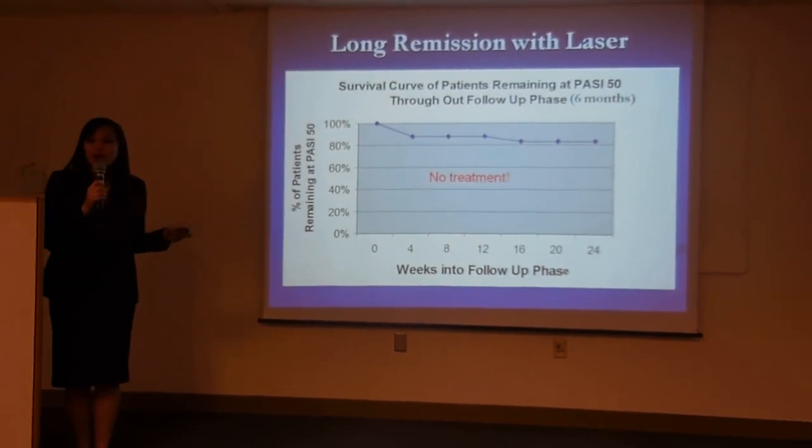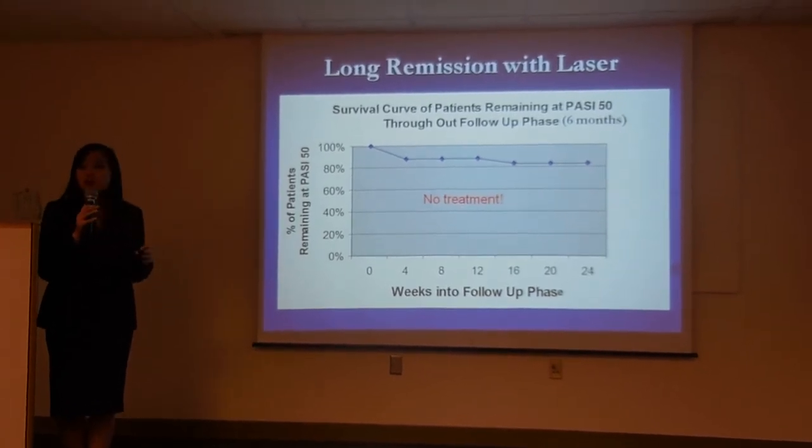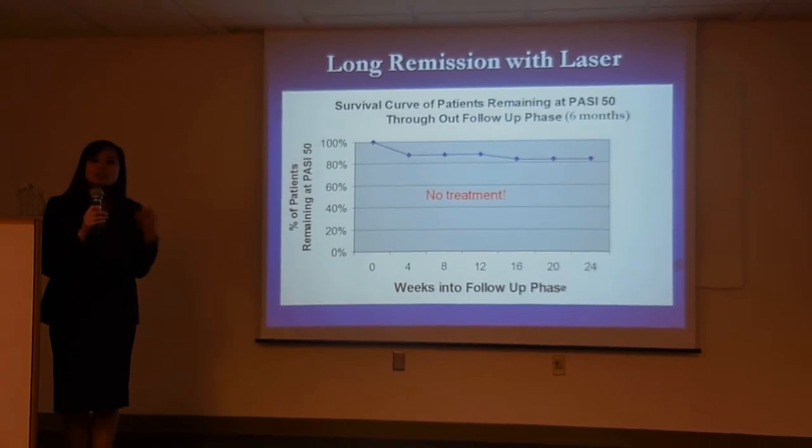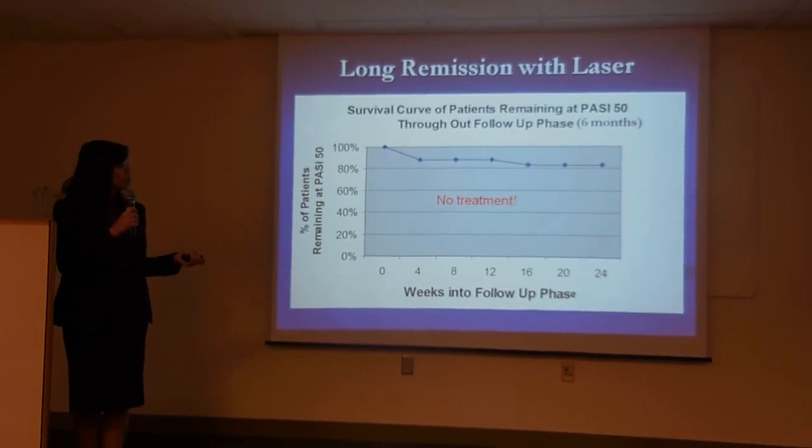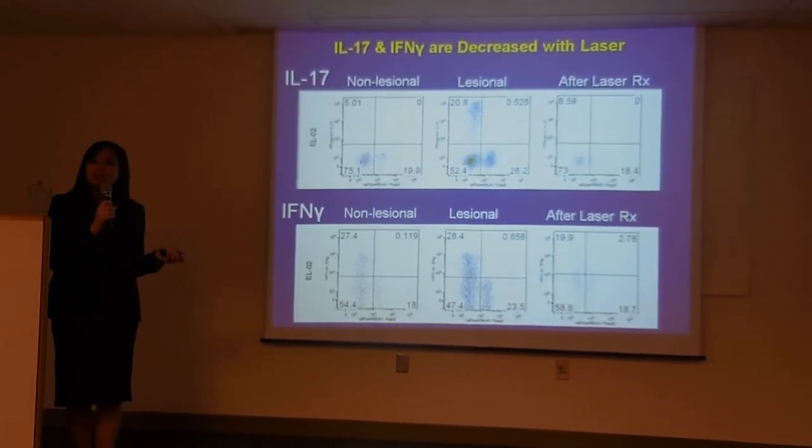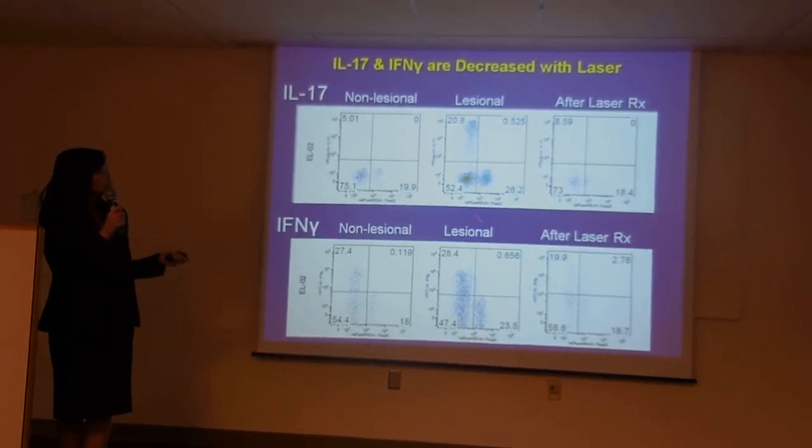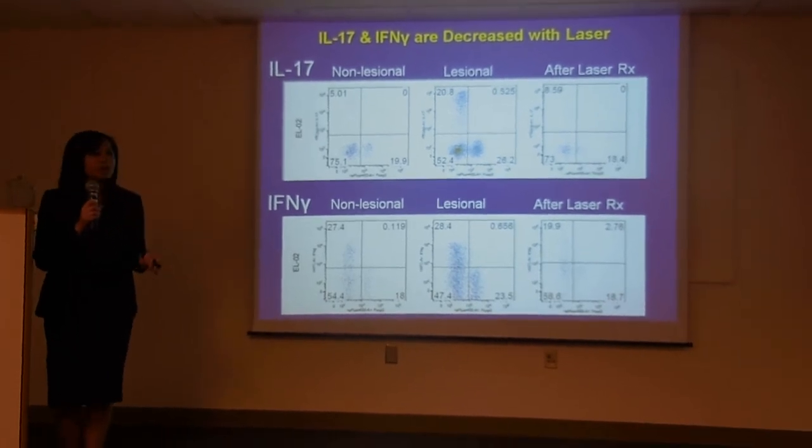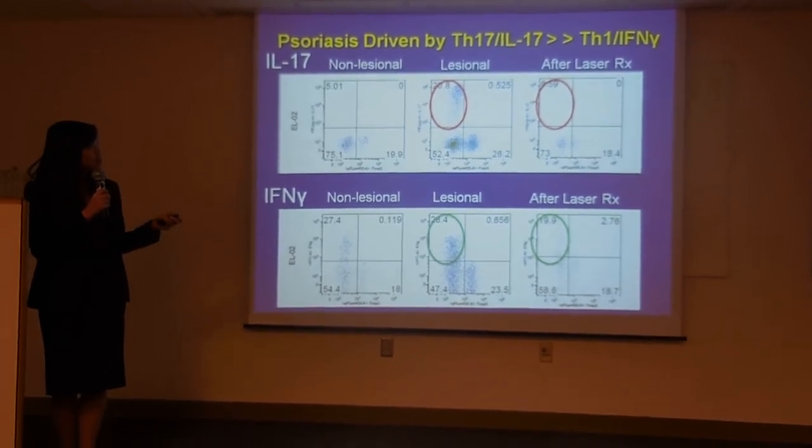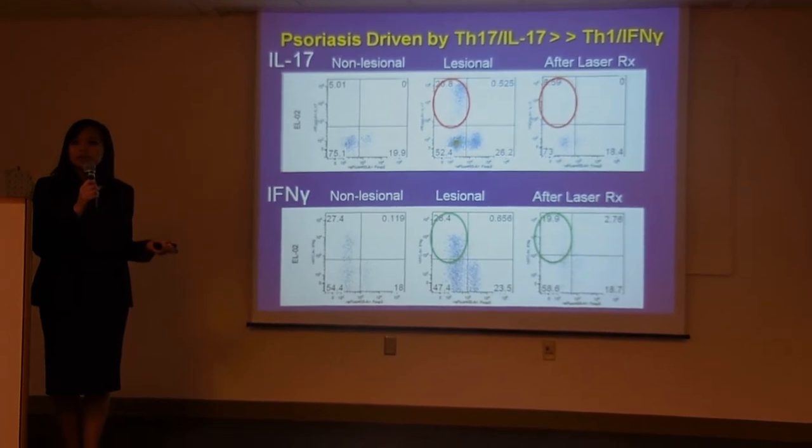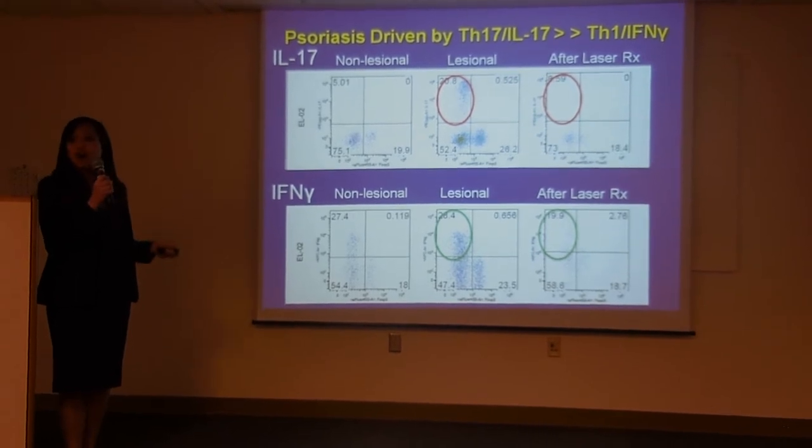And so like I said before, after the laser treatment, most patients are able to maintain remission for a long period of time, so up to six months. And this could be partially attributed to the fact that these T cells are almost completely eliminated. So here's some more data with interleukin-17 and interferon gamma. And this is comparing non-lesional skin to lesional after laser treatment. So you can see that, again, similar to the data before, the number of IL-17-producing cells as well as interferon gamma-producing cells is greatly reduced after laser treatment. And it's almost similar to the profile of the non-lesional skin.